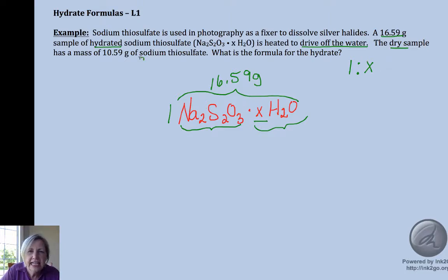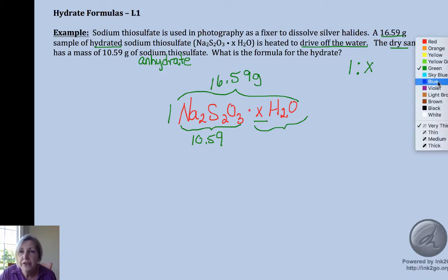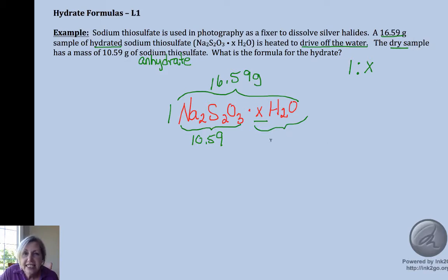So this is called an anhydrate, without water, and that's 10.59. Now if you lay it out this way, hopefully you can see pretty obviously that this is just a simple subtraction to get the water. And so that gives us 6 grams of water.